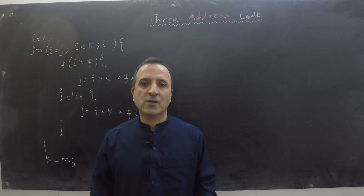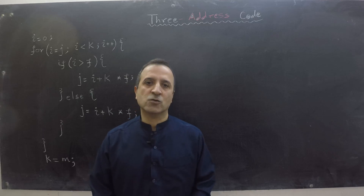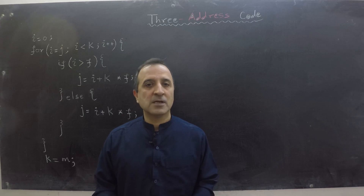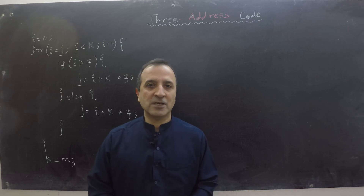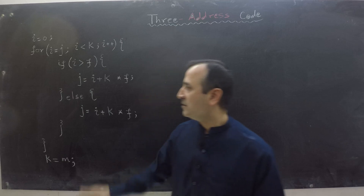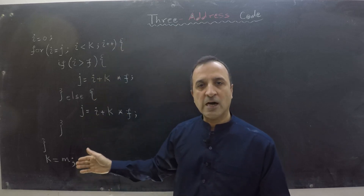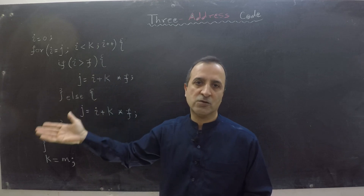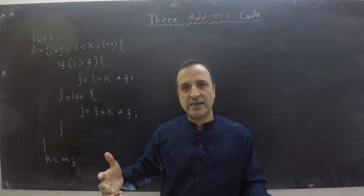In this video we will learn about three address code. Three address code is an intermediate representation of our source code. Compilers use syntax-directed translation to generate three address code, but in this video we will be writing three address code by hand. We are given some source code and our goal is to convert it by hand into three address code so that we can understand things clearly.